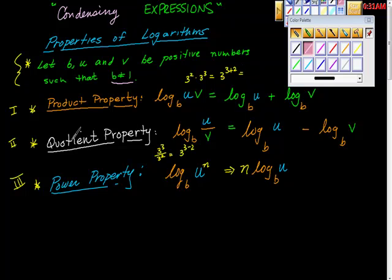Similarly, we have this. The quotient property says that we have log base b of u over v. It's the same as log base b of u minus log base b of v. Again, using the very simple example, 3 to the third power divided by 3 to the second power, using the second rule of exponents is 3 to the 3 minus 2 power, otherwise 3 to the first power.